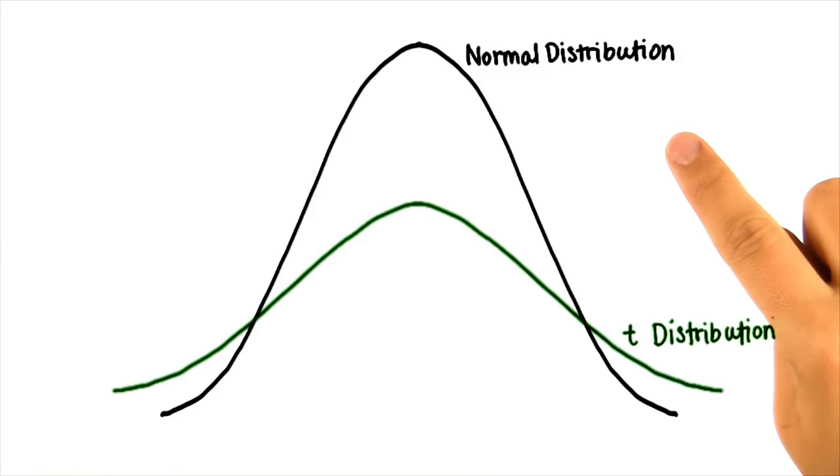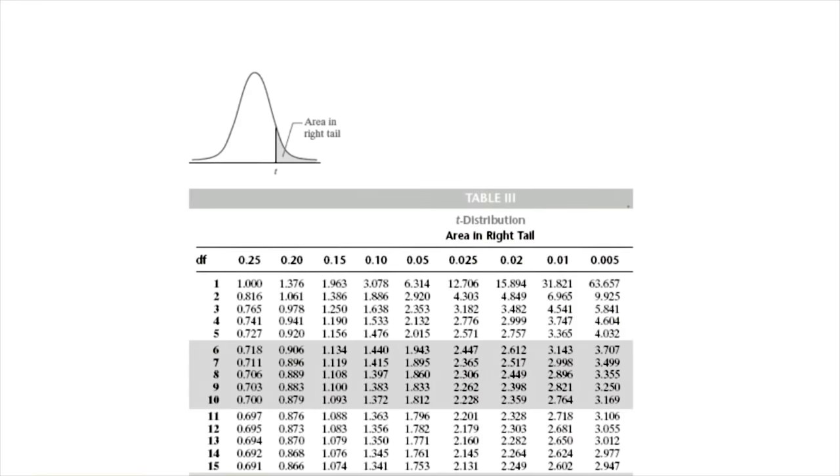Since we no longer have a normal distribution but a t distribution, we have a new table. This is called the t table.